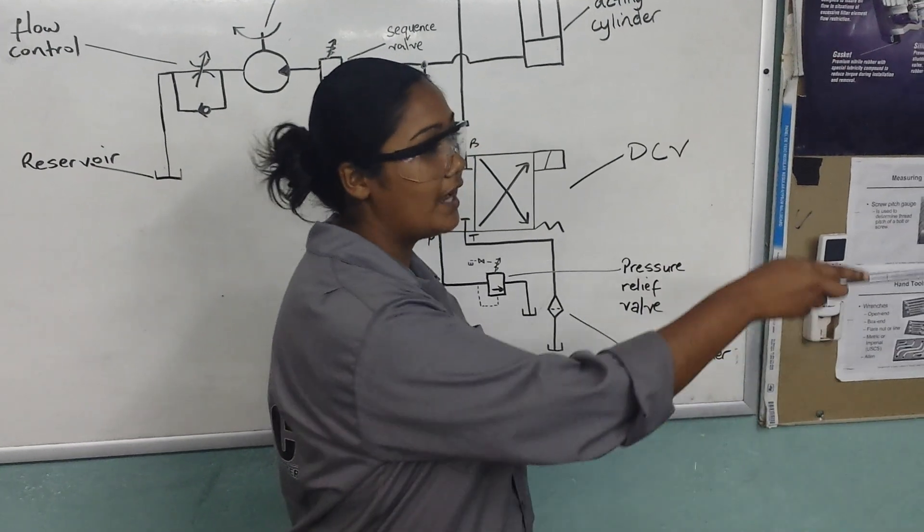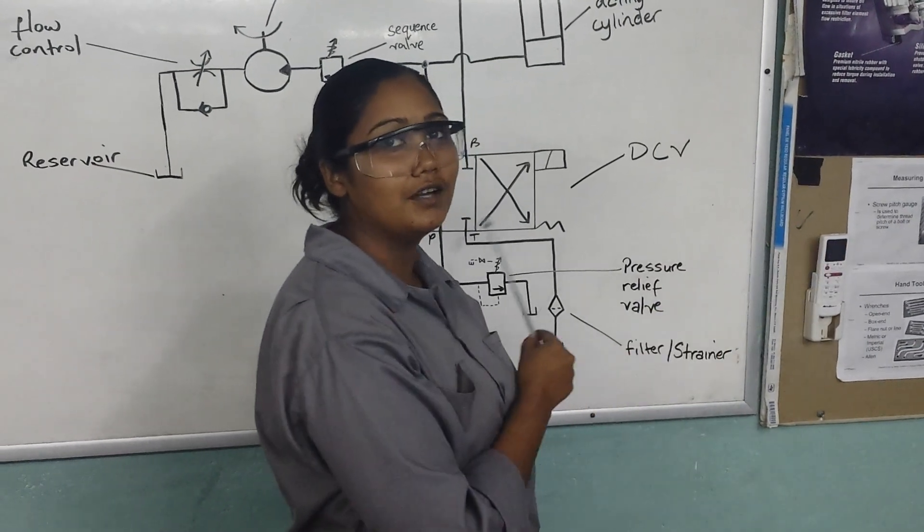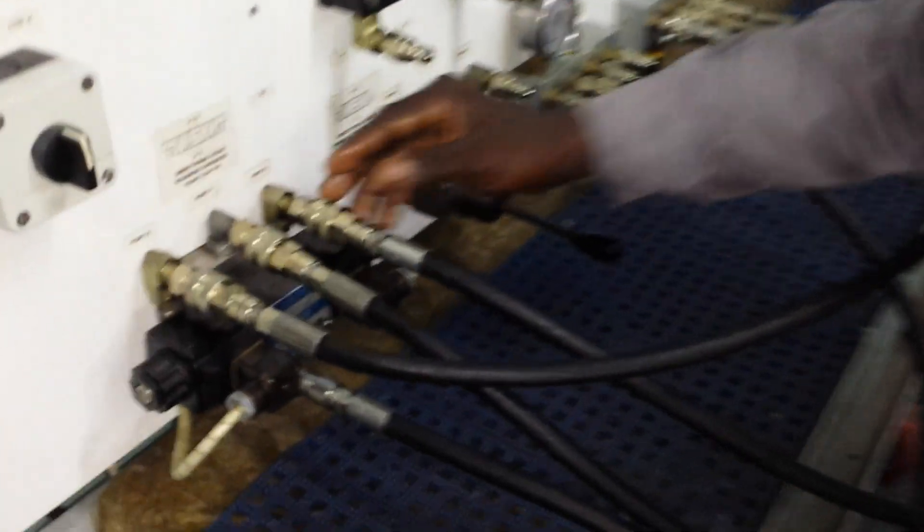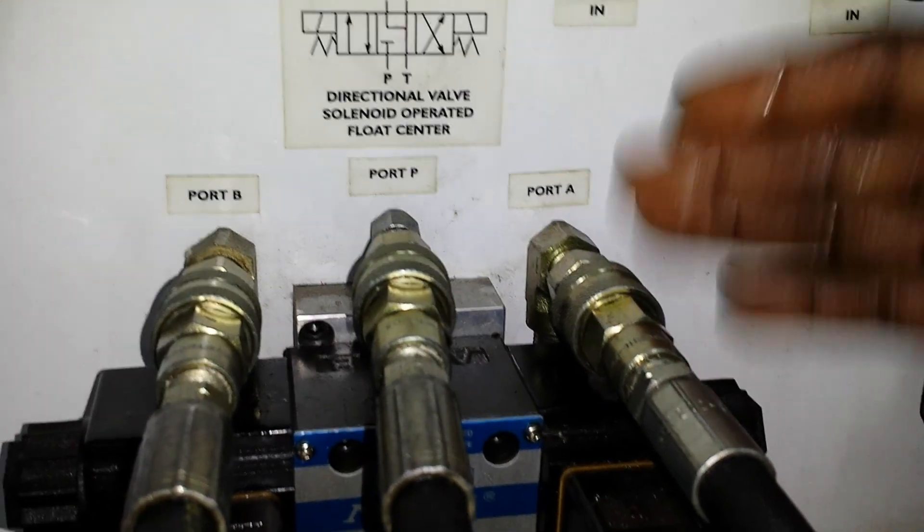Now we are going to demonstrate on a hydraulic trainer the operation of the circuit. Here we have the directional control valve, solenoid operated, float centered.